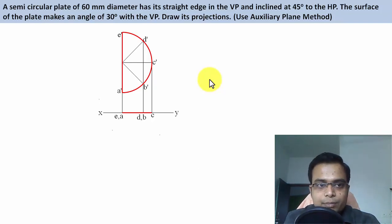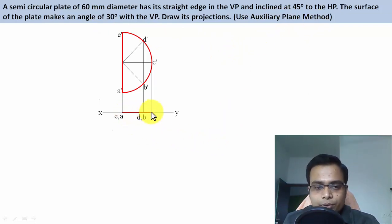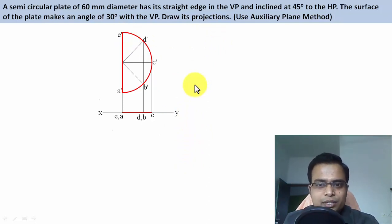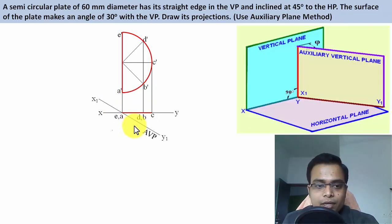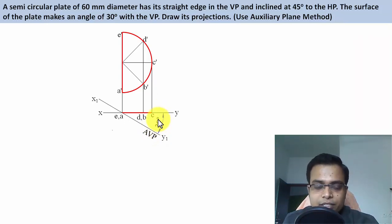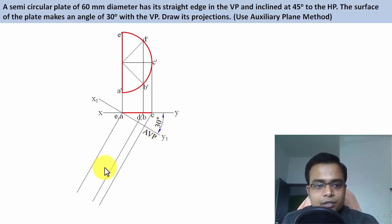Now here we are using the auxiliary plane method. Previously, what we used to do was recreate the top view at an angle of 30 degrees and then work out the front view — a squeezed-up semicircle. Instead of rotating this top view, what we'll do is fix an auxiliary vertical plane here, passing through EA, since EA is always in contact with the vertical plane. We keep this plane at an angle of 30 degrees and draw lines from all points so that they intersect x1y1 at an angle of 90 degrees.